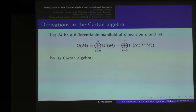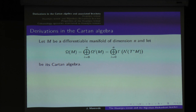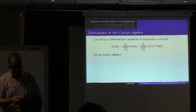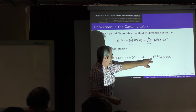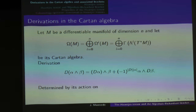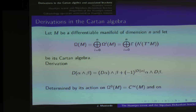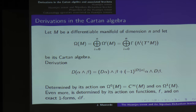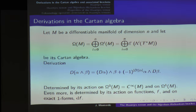Let's start with derivations in the Cartan algebra. The Cartan algebra is the algebra of differential forms on an ordinary manifold with the exterior product — sections of the exterior product of the cotangent bundle. A derivation is a map satisfying the graded Leibniz rule. It is determined by its action on functions and on exact one-forms, because locally any differential form can be expressed as sums and products of functions and exact one-forms.